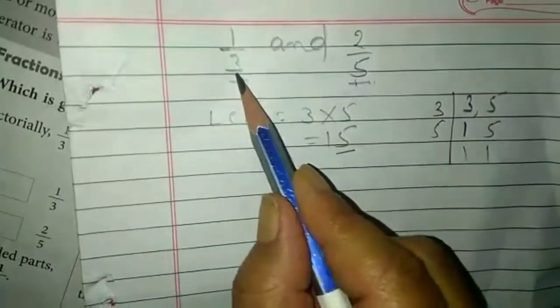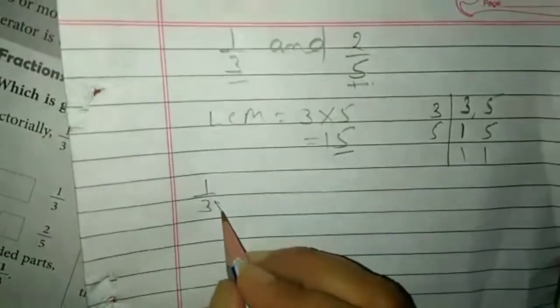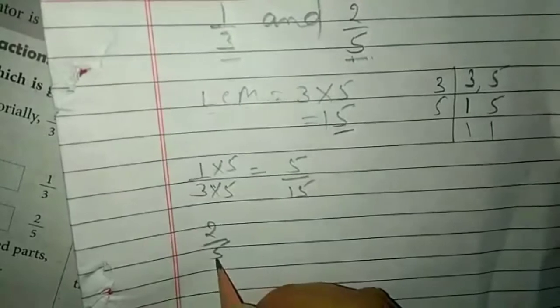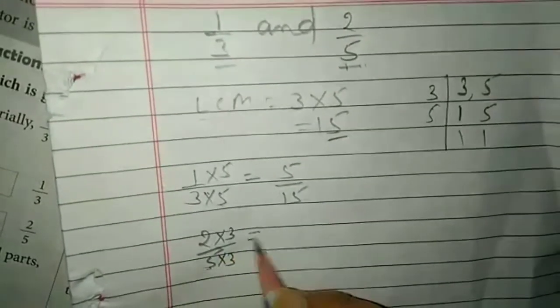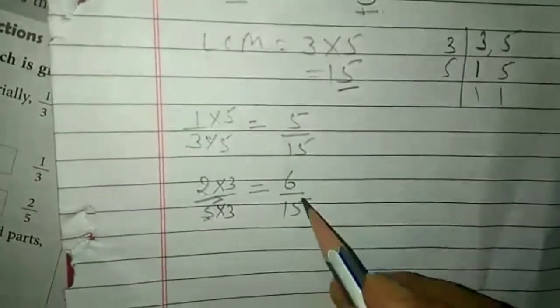Ab hum in denominators ko fifteen ke equal karenge. One upon three ko hum kitne se multiply karenge ki yeh fifteen ho jaye? Five se — aur upar bhi same number se multiply karenge: five one ja five and three five ja fifteen. Next: two upon five ko hum teen se multiply karenge — upar bhi same: two three ja six and five three ja fifteen. Now we have two fractions: five upon fifteen and six upon fifteen. Ab inke denominators same ho gaye. Ab hum numerator dekhenge — jiska numerator bada hoga woh fraction badi hogi. So here six upon fifteen is greater.